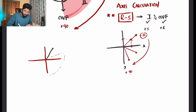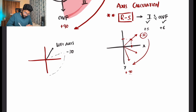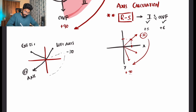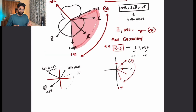If the plotted point falls outside the normal axis towards the left side, we call it left axis deviation. If it falls outside towards the right side, we call it right axis deviation. If it falls extremely to the right, we call it extreme right axis deviation.